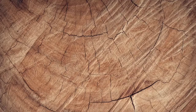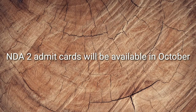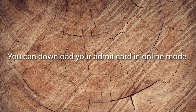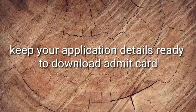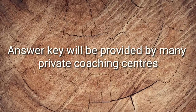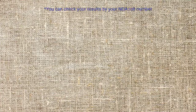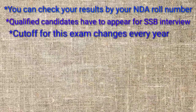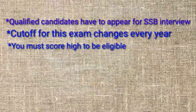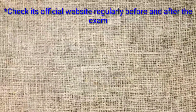Eligible candidates can download their admit card one or two weeks before the exam. For NDA1, expect dates in March 2019, and for NDA2, expect dates in October 2019. Admit cards will be available in online mode; keep your application details handy. If you find any error, contact UPSC officially immediately. The NDA answer key will be available within a week after the examination. Results will be announced within a month after the exam, and they consist of the roll numbers of qualified candidates. Cut off changes every year, so check the official website one week after the exam.